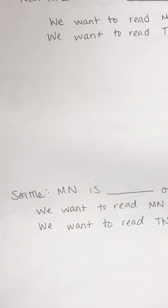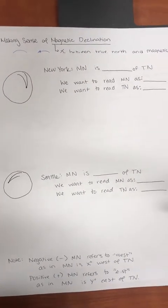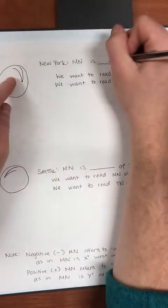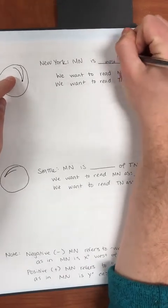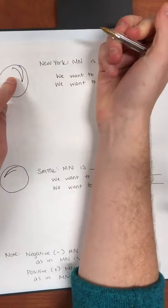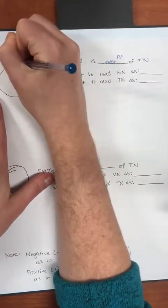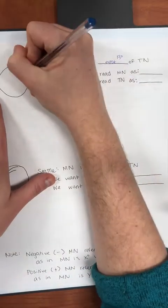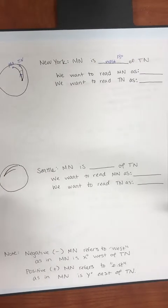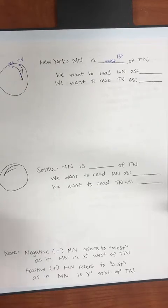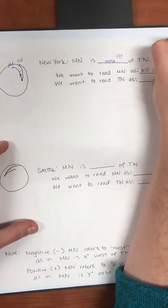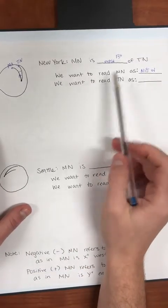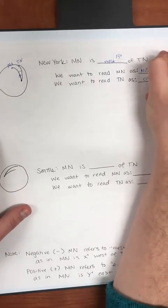Let's talk about how to adjust your Brunton for New York and Seattle. In New York, magnetic north is west of true north by about 13 degrees. Since the compass needle always points toward magnetic north, we'd really like to be able to read that as north 13 west, so magnetic north is no longer zero on the Brunton — now it's north 13 west. We also want to read true north as zero degrees.